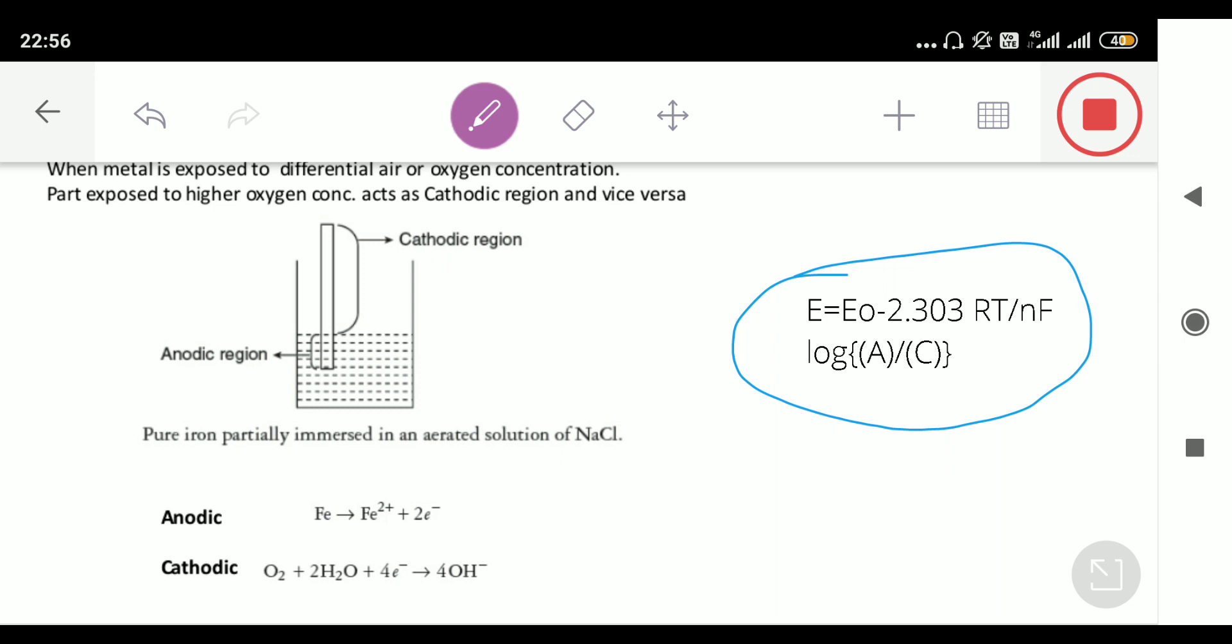This kind of corrosion is called differential aeration corrosion and also called concentration cell corrosion. This is applicable to all those ships which are inside the sea, because some of the parts of the ship made of iron are immersed in water and some are above.